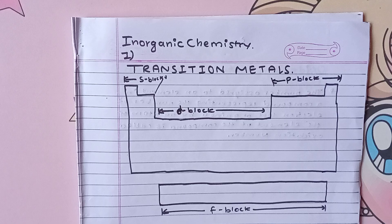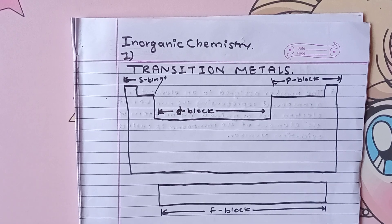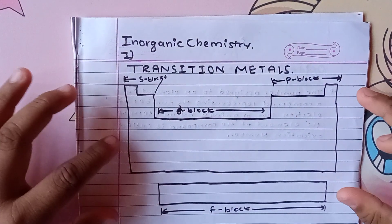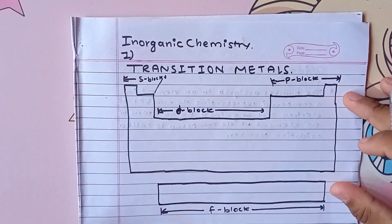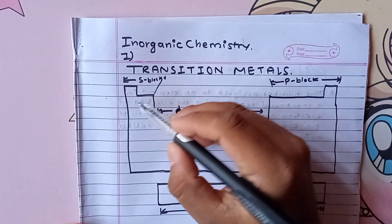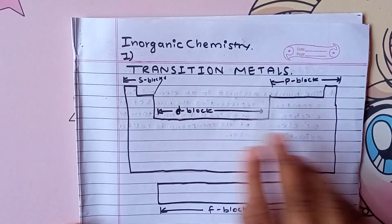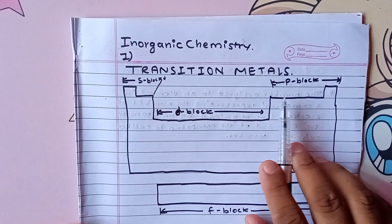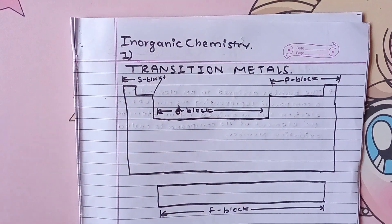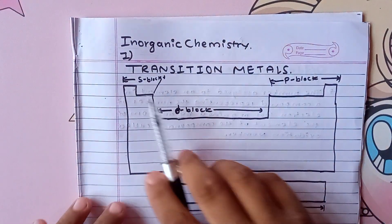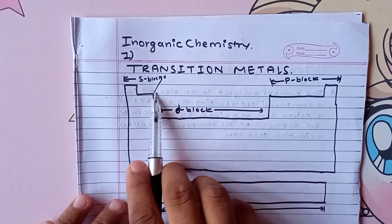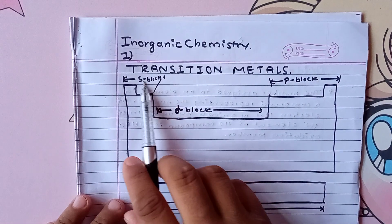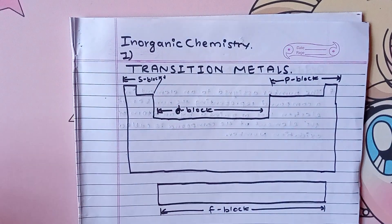What are we going to cover regarding transition metals? First, we are going to use the periodic table. We are going to look at the block structure — the s-block, which includes hydrogen, helium, lithium, beryllium, boron, and carbon. We are going to use these two groups and this block.